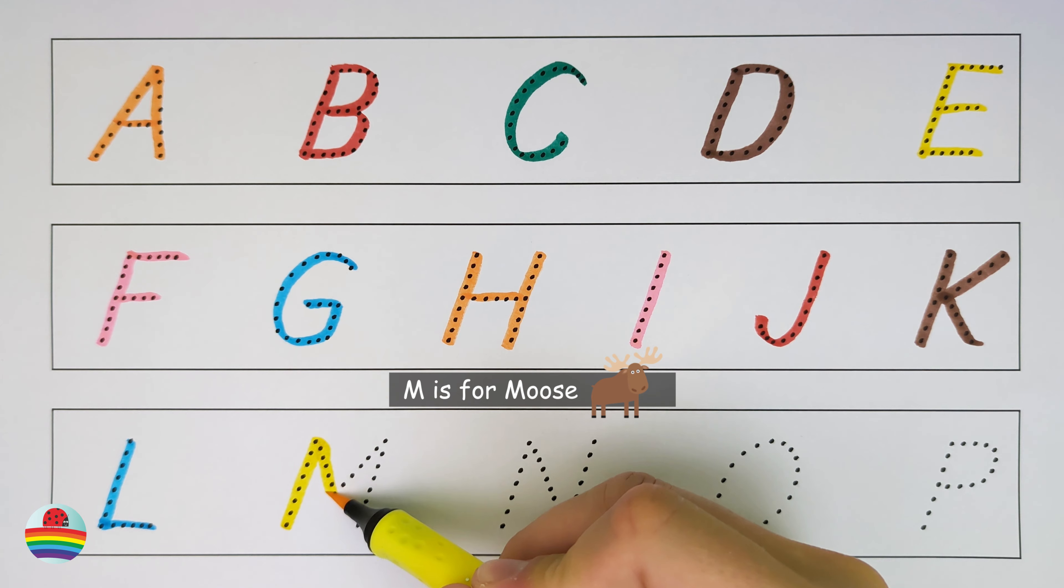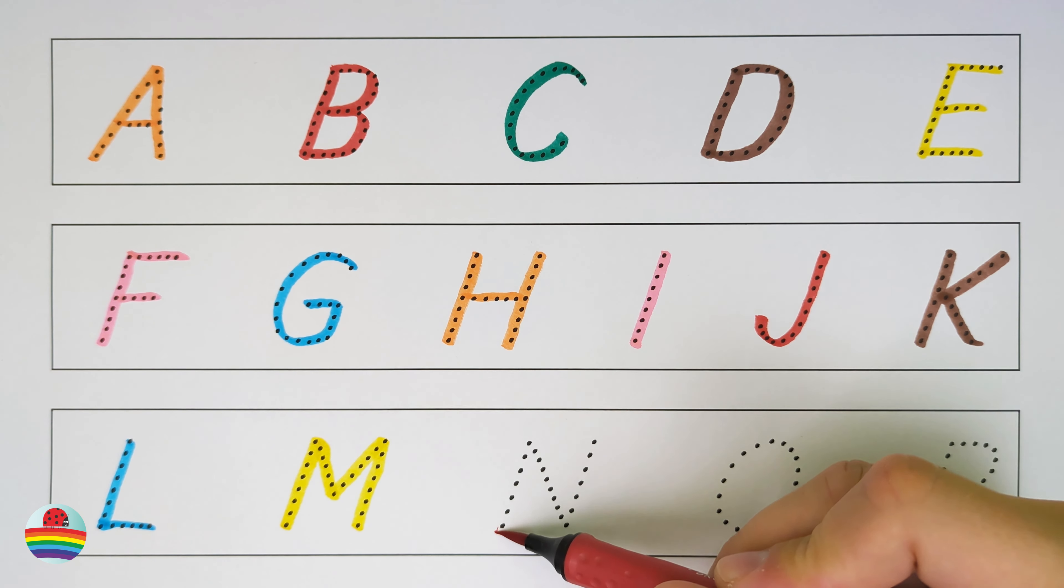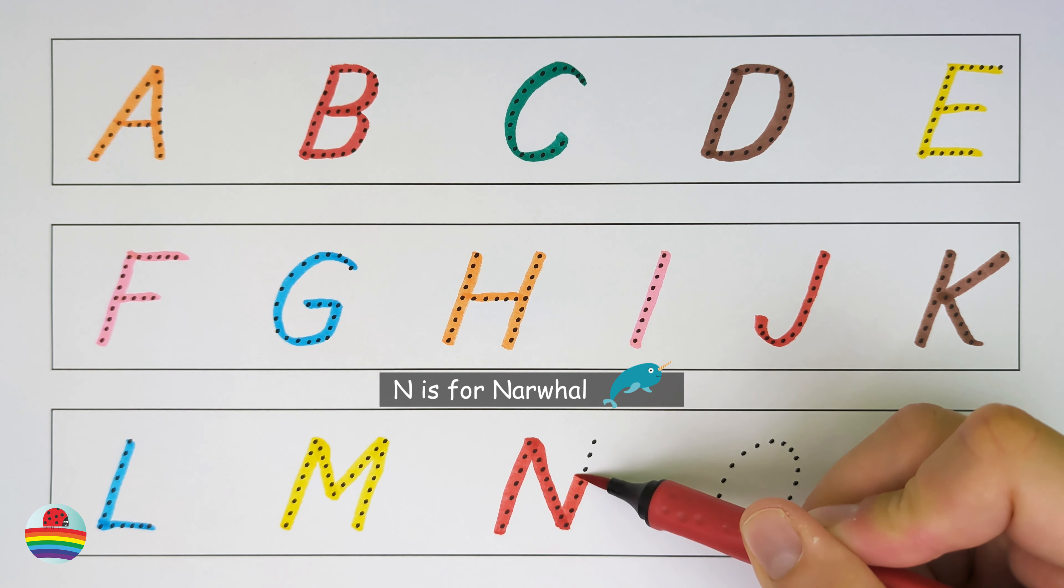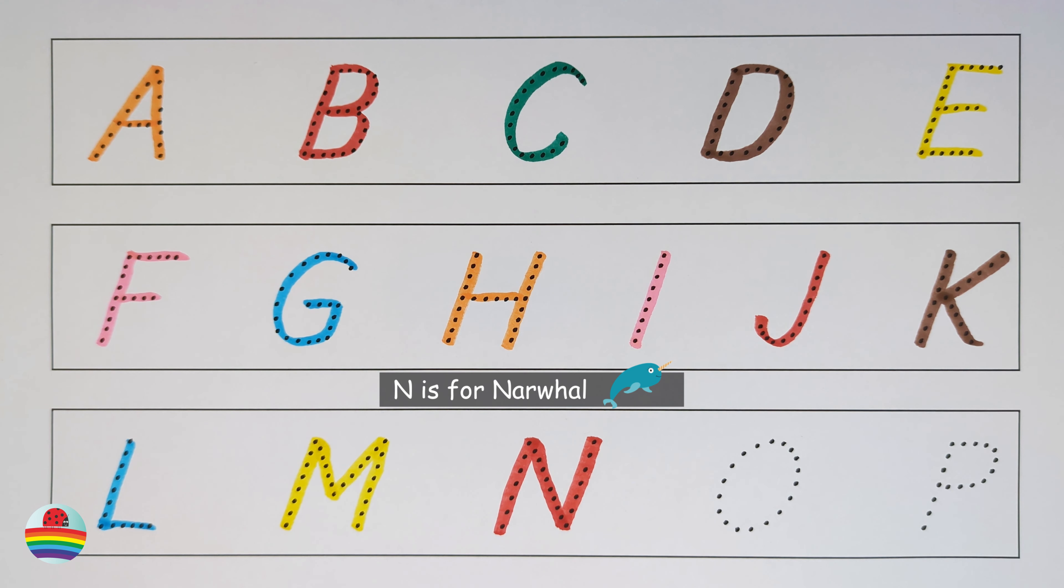M. M is for Moose. M. N. N is for Narwhal. N. O. O is for Octopus. O.